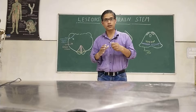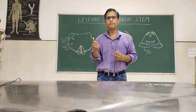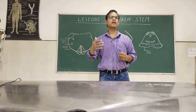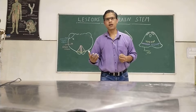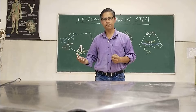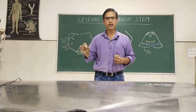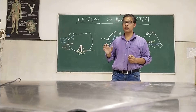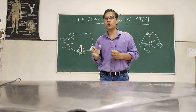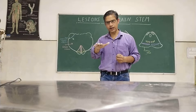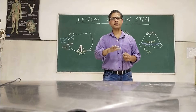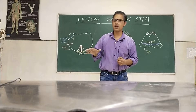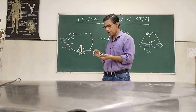If you can memorize just two points, that will be helpful. Number one: the motor part is concerned with the ventral area — corticospinal and corticonuclear tract. Number two: which cranial nerve is at which level. The 9th, 10th, 11th, and 12th nerves are concerned with the medulla. The 7th and 8th nerves are at the junction of the pons and medulla, with the 6th and 7th emerging in the pons. The 3rd and 4th nerves are concerned with the midbrain.